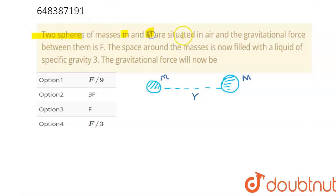of mass small m and capital M are situated in air and the gravitational force between them is capital F. The space around the masses is now filled with a liquid of specific gravity 3. The gravitational force will now be: